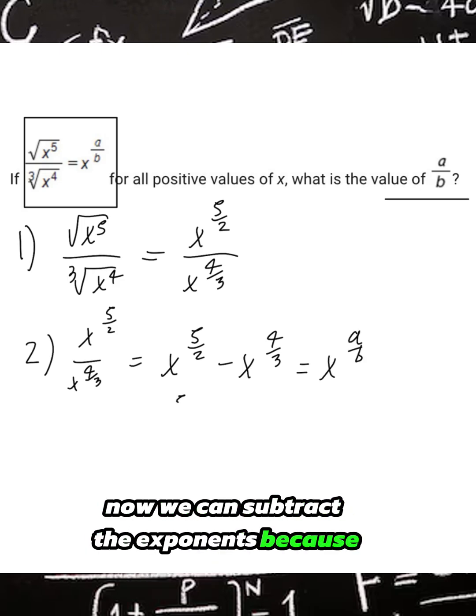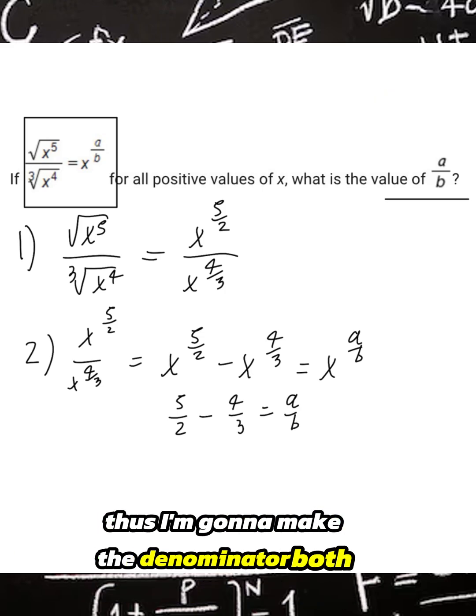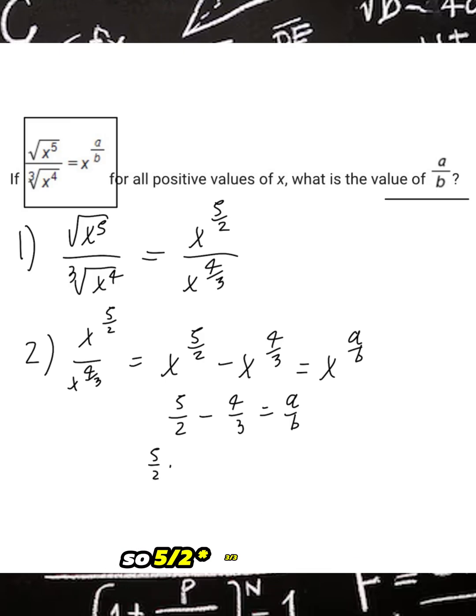Now we can subtract the exponents because they have the same base, but we first must make them have the common denominator. Thus, I'm going to make the denominator of both of them 6. So 5 over 2 times 3 over 3 is 15 over 6, and 4 over 3 times 2 over 2 is 8 over 6.